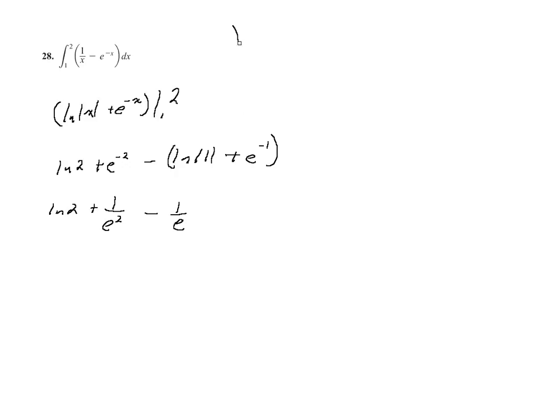Anyway, yeah, this is just as good of an answer. I think that most solutions manuals would leave it like that. Natural log of 2 plus 1 over e squared minus 1 over e. You can even write it as natural log of 2 plus e to the negative 2 plus e to the negative 1. I don't know, that's about as good as it gets.